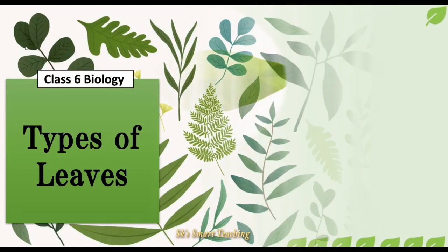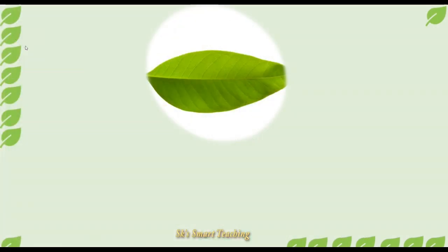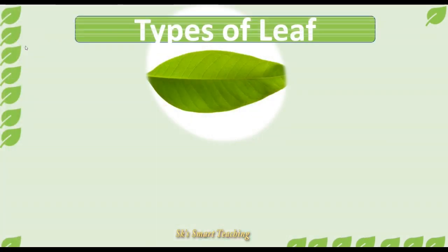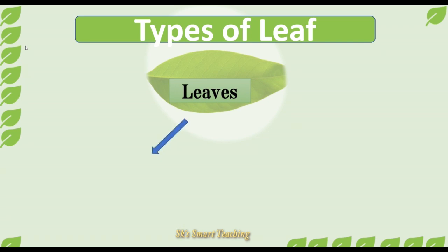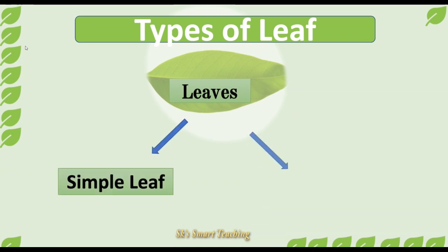Types of Leaves. Leaves can be divided into two types: Simple Leaves and Compound Leaves.